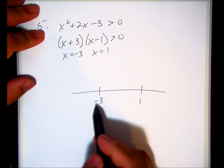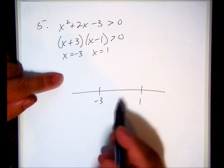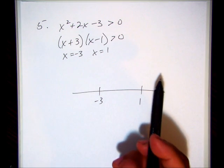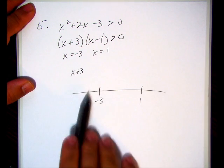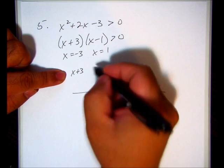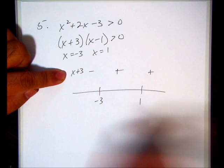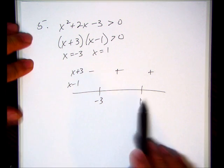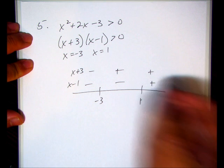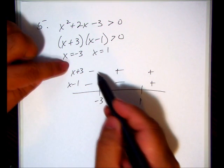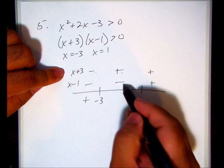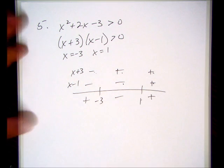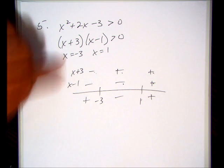This is a number line, so the negative numbers on the left. What I want to do here on the number line is determine for what regions this combination is going to give me positive or negative answers. The boundary for x + 3 is -3. It's going to be negative to the left of -3 and positive to the right. For x - 1, the boundary is 1. It's going to be negative to the left and positive to the right. The combination: negative times negative is positive, positive times negative is negative, positive times positive is positive.